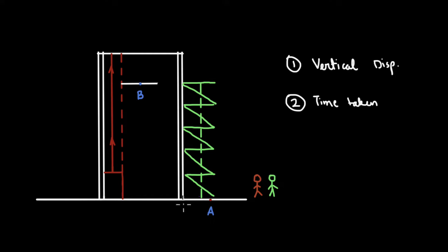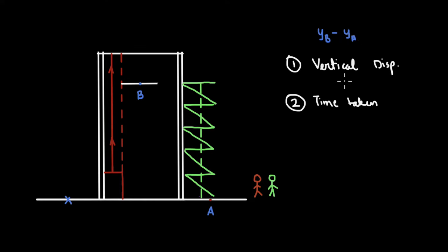We want to know the vertical displacement as you both go from A to B using different paths, and how much time is taken in both cases. For the first case, it doesn't matter if you take the lift or the stairs — the vertical displacement is the same. We're simply calculating yB minus yA, and since you both start and end at the same positions, vertical displacement only depends on the initial and final states, not the path taken.